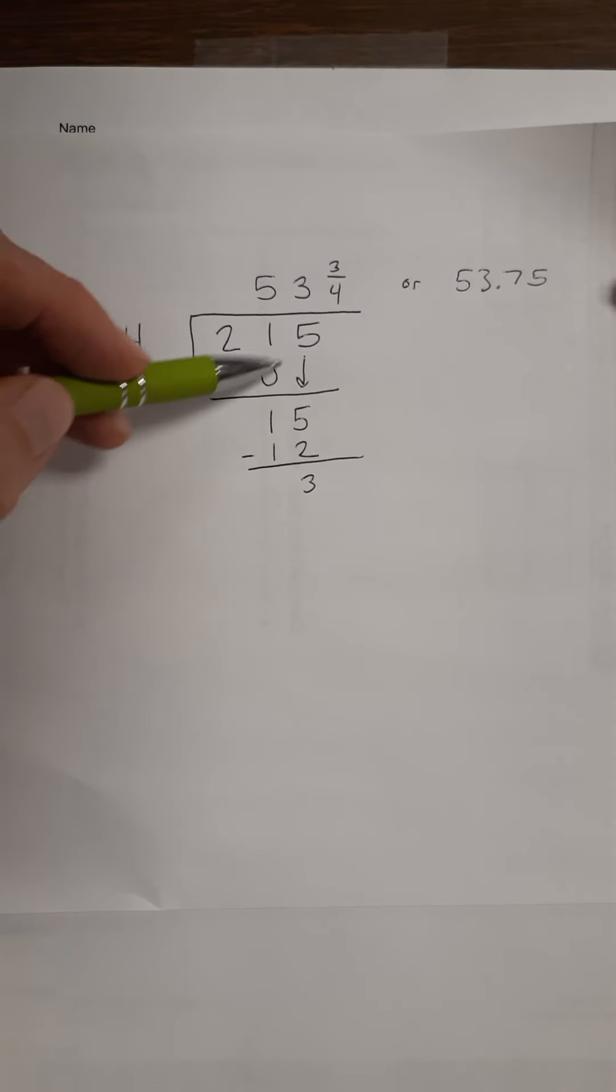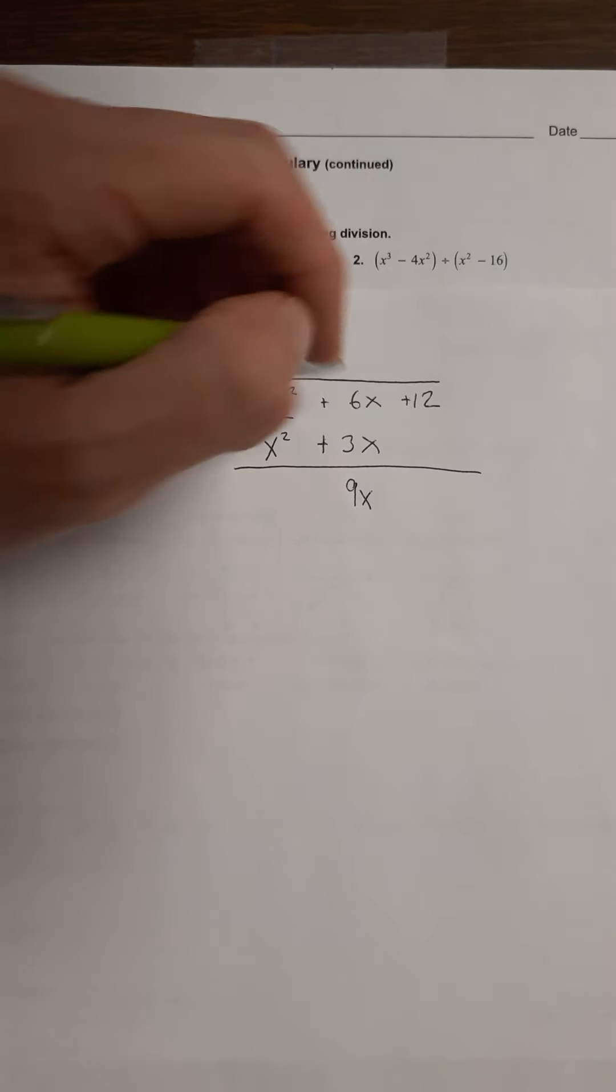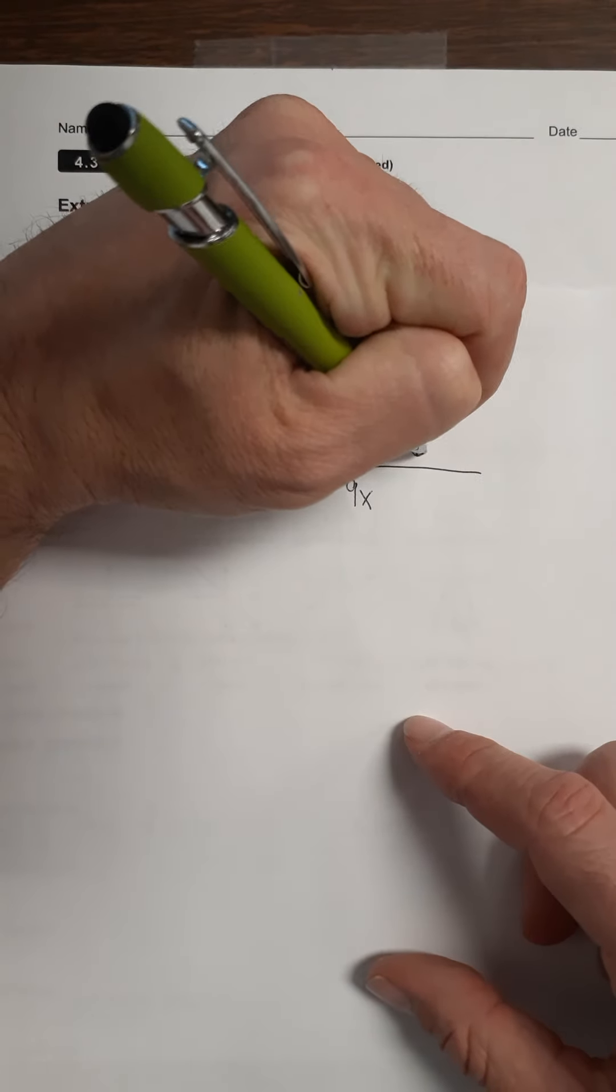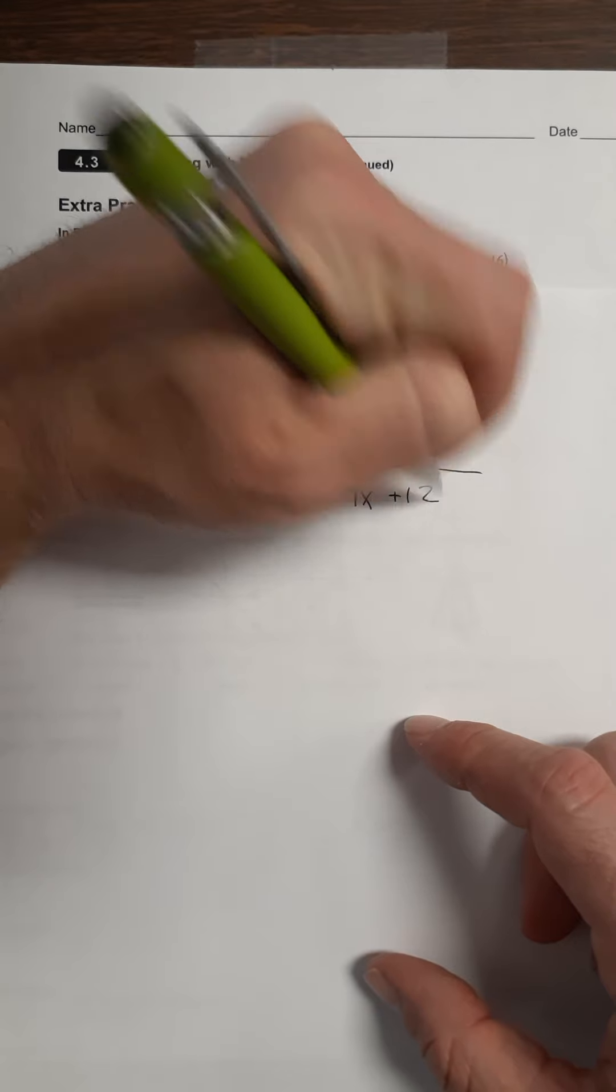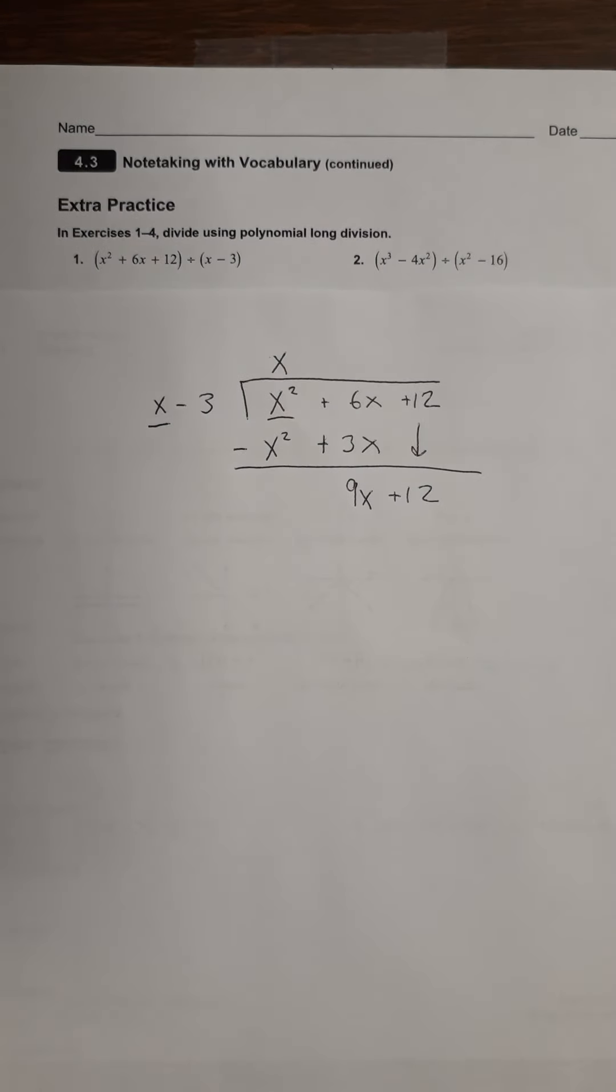Now we have x squared minus x squared. Those cancel out. That was the whole point. And 6x plus 3x makes 9x. And then the next thing we did is we carried down that next thing. And here, the next thing is the number plus 12, so plus 12. So now we're carrying that down.